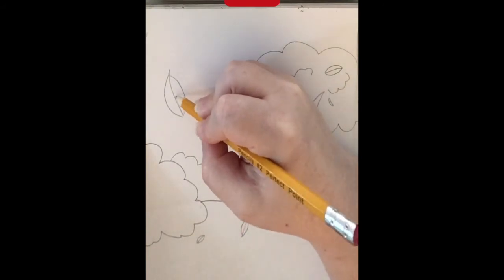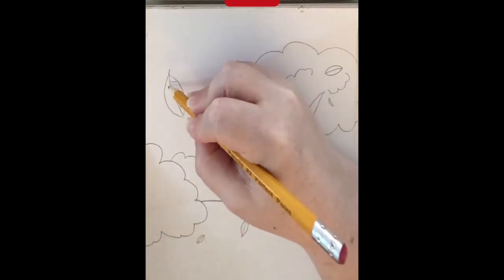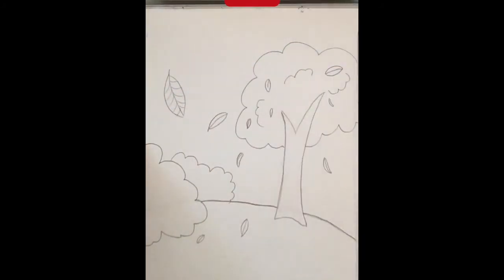And the closer things are to us, the more details we see, so we can add some lines to our leaves.